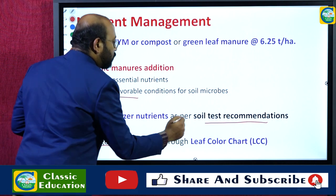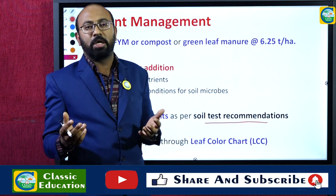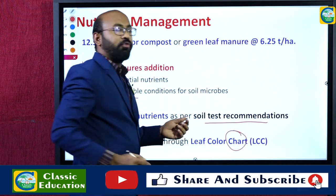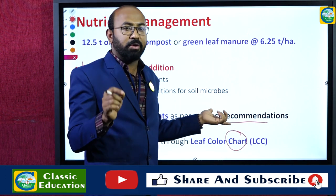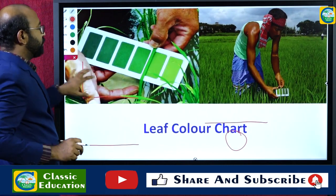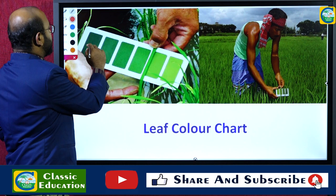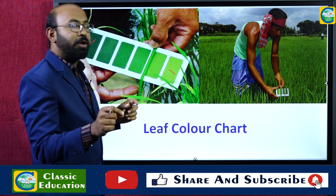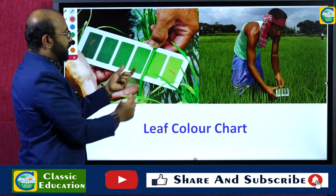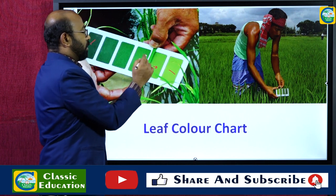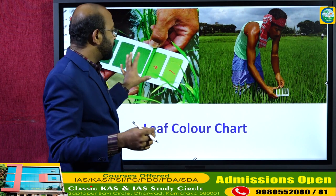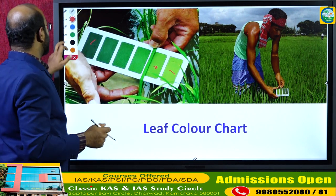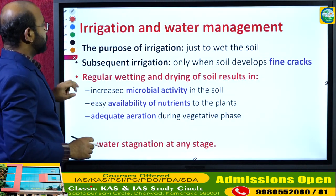The government of India has introduced Soil Health Cards, which indicate soil fertility and deficient nutrients. Based on soil test recommendations, nutrients can be applied. Nitrogen specifically can be applied through the Leaf Color Chart — a technology based on the color of the leaf. A light green leaf indicates nitrogen deficiency; based on this indication, nitrogen application can be decided for the SRI field.